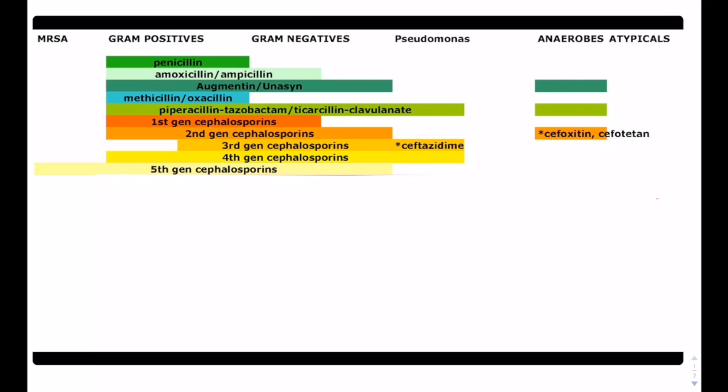The third generation has less gram positive, more gram negative, and one of them does cover for pseudomonas, ceftazidine. So one of the reasons you should know about pseudomonas is because it's a really, really bad bug to get. And so you have to be familiar with what medications can work on pseudomonas.